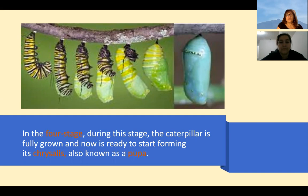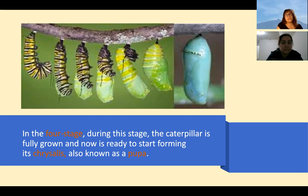This is the fourth stage. During this stage, the caterpillar is fully grown and now it's ready to start forming a chrysalis. Chrysalis means she's going to start building her own home — she's going to protect herself with a kind of skin that she's going to start building. This stage is also known as a pupa. The pupa is a little house where they can be protected. See how now the caterpillar is hanging down. I love how Jose said that she is doing tricks — she or he can be doing tricks, but actually this is what caterpillars do to be ready to build the house.